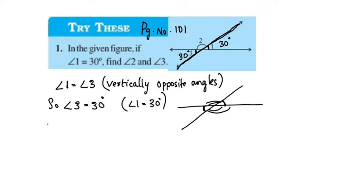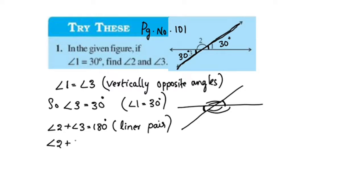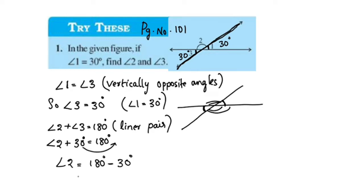Angle 2 plus angle 3 is equal to 180 degrees — linear pair. Angle 3 is 30 degrees, so angle 2 is equal to 150 degrees.